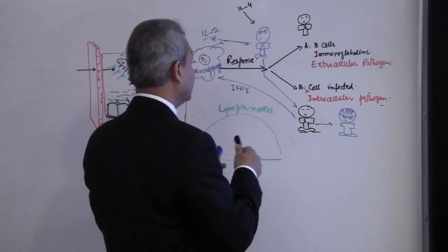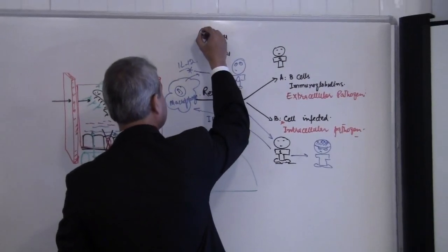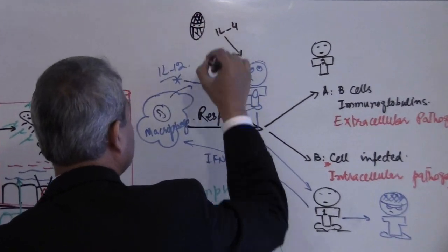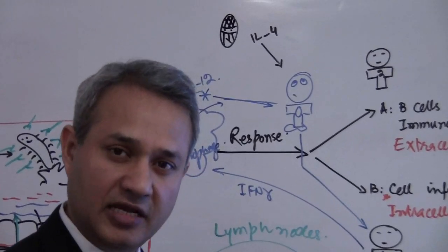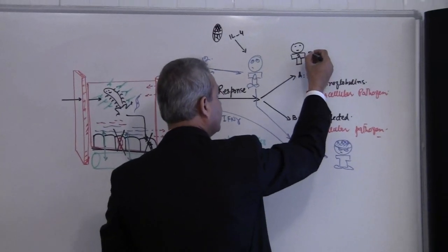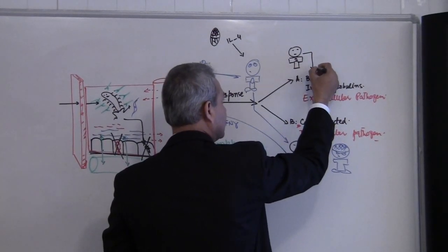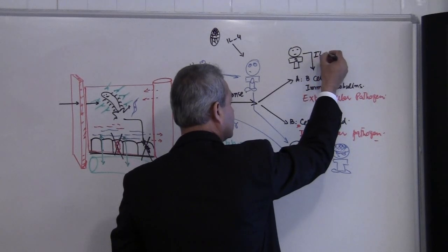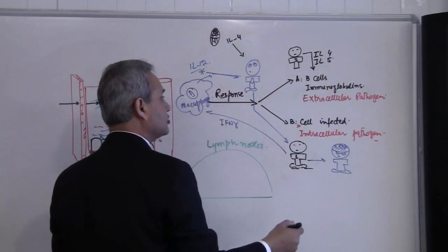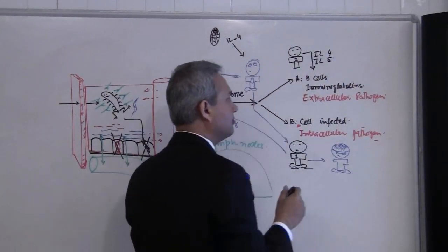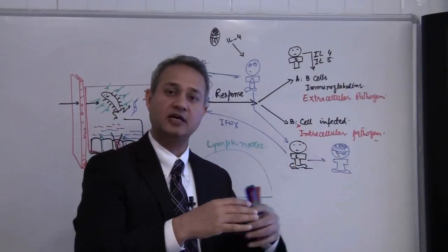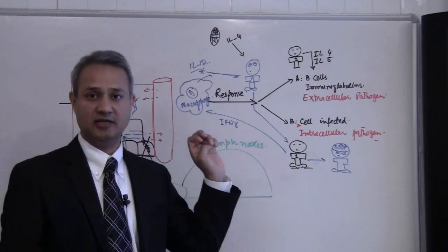On the other hand, if we receive IL-4, we do not know which cell sends the IL-4. There is a ninja cell, a hidden cell. IL-4 is secreted by some cell which causes the T helper cell to become T helper 2, which would then act on the B cell by secreting interleukin-4 and interleukin-5. This would cause the B cell to become active, and the response from the B cell is to secrete immunoglobulins. Immunoglobulins in turn would fight with the pathogen sitting in the extracellular tissue.